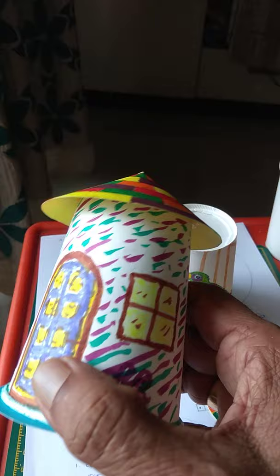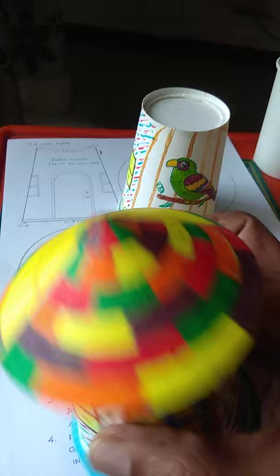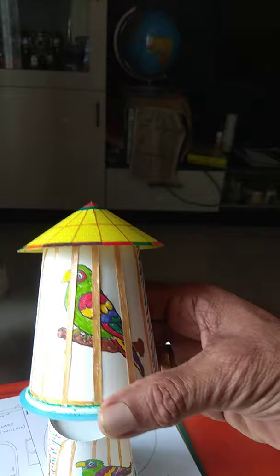This one, this way. See, front side I have made a house like. Top portion I have put half as the roof and half as the bird cage. So this can be done like this.